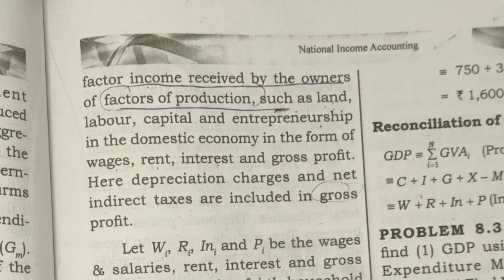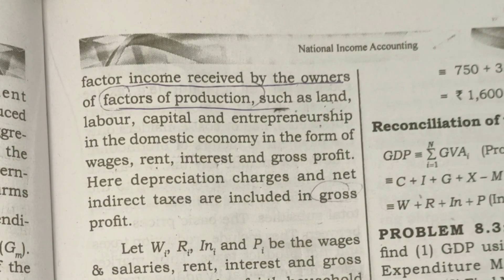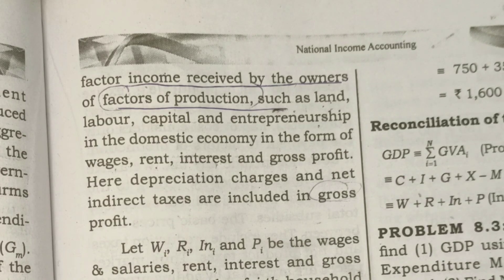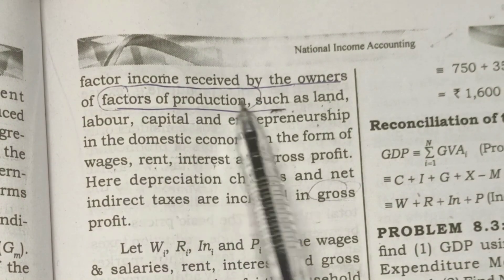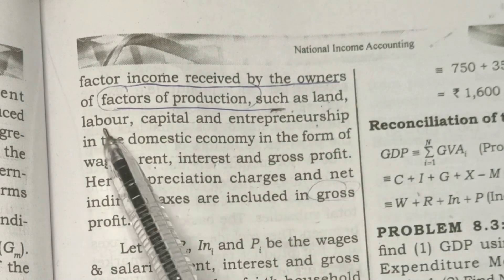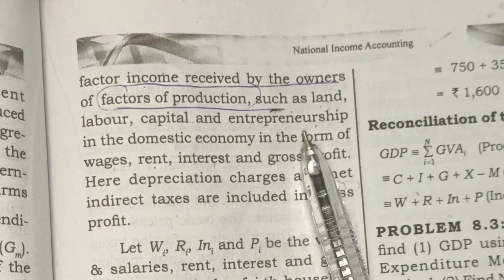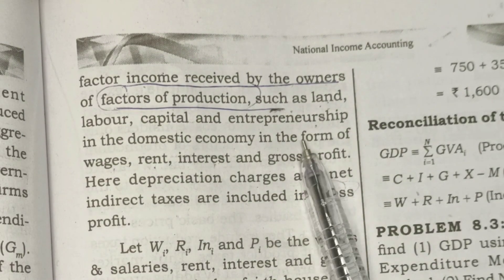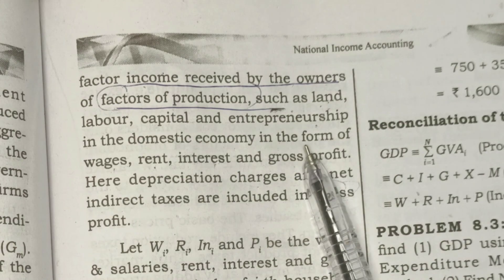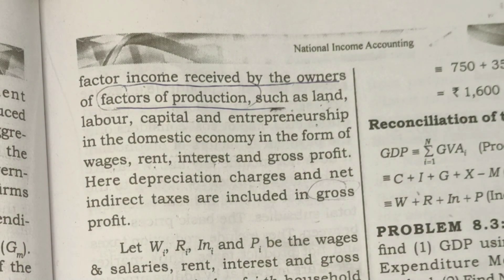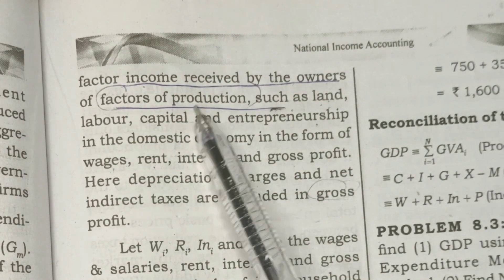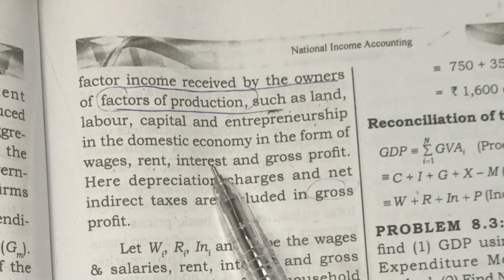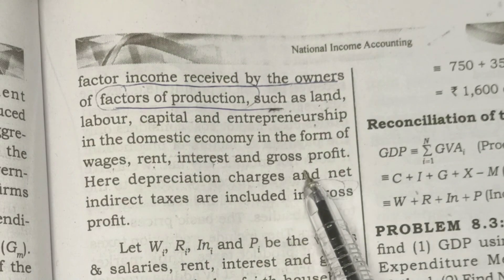That is what we discuss in the first chapters. This chapter covers the circular flow of income. What are the factors of production? Land, labor, capital, and entrepreneurship. This is the income — that is, this is the service. This is the income. Land, labor, capital, and entrepreneurship, and gross profit.